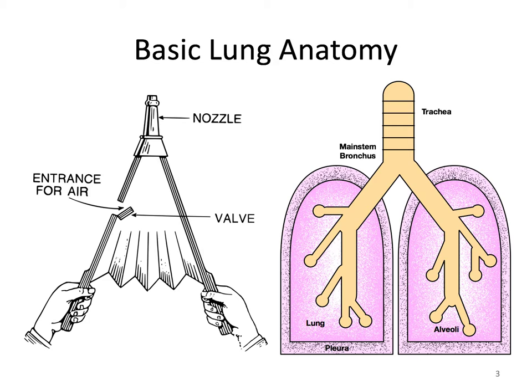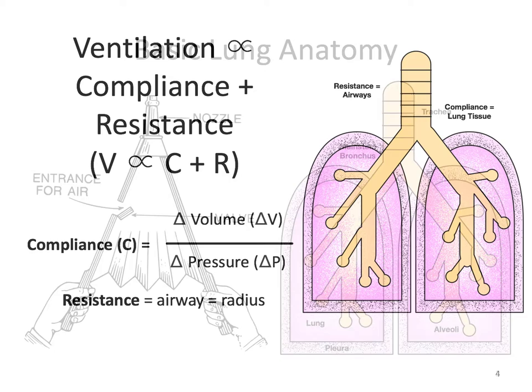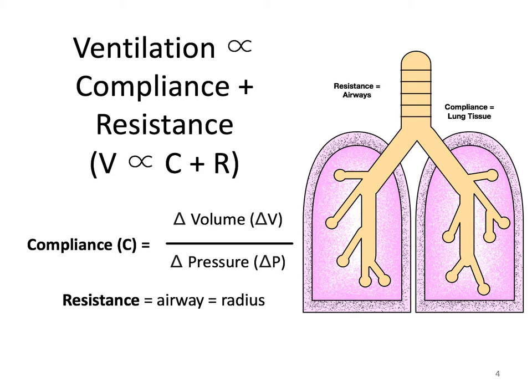The function of expiration requires elastic recoil, often referred to as compliance. Ventilation can be said to be proportional to compliance plus resistance. Compliance refers to the lung tissue and alveoli, and is associated with surface tension of the alveoli related to surfactant, and the connective tissue of the lungs which establishes elastic recoil.